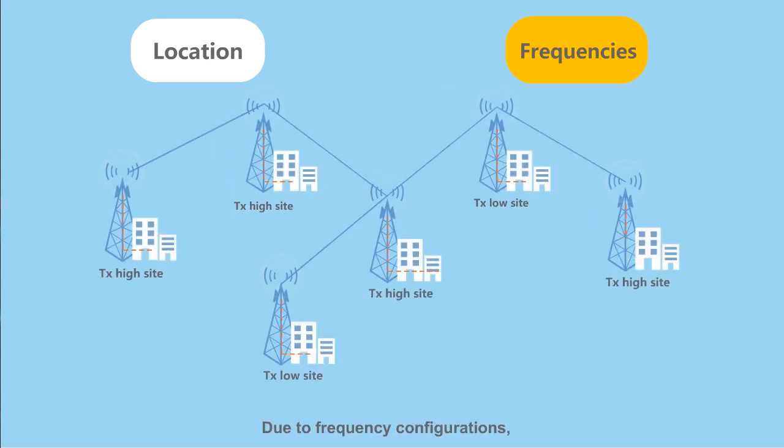Due to frequency configurations, transmit high and transmit low sites are usually arranged alternately in a microwave network.